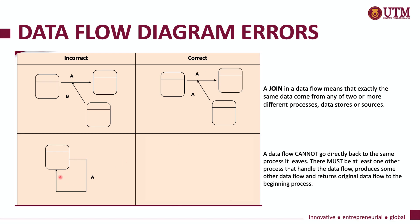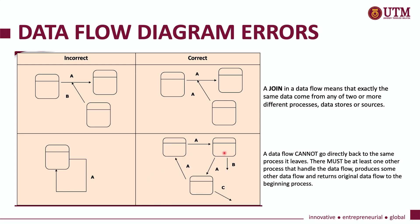Another thing to remember is that a data flow cannot go directly back to the same process without going through another process. This is a data flow diagram, not an entity relationship diagram. Such a self-loop is not allowed. To fix this, you need to show what processes are involved — data flow A must go into process two and process three before being returned to process one, showing the full cycle.